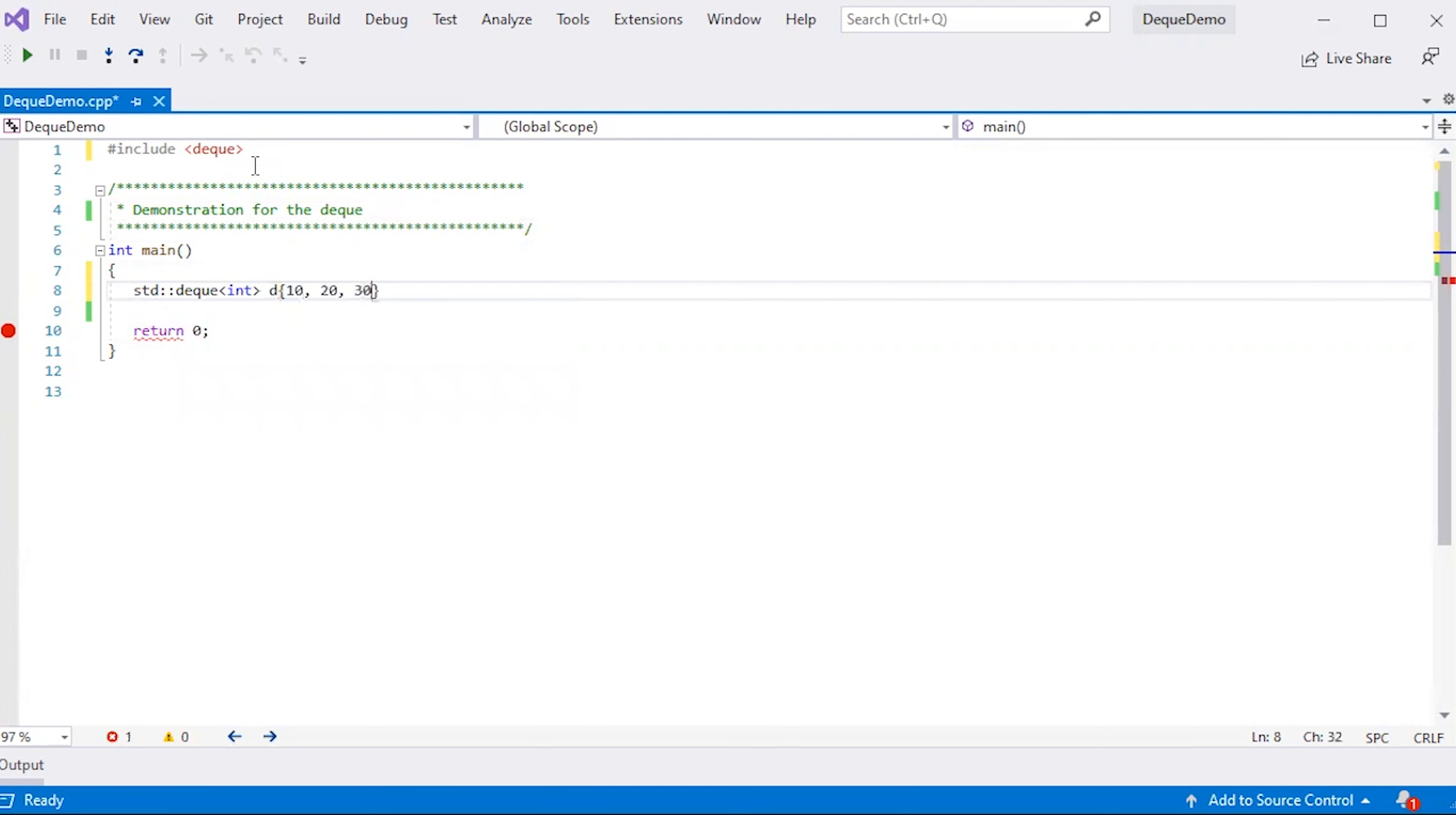I'll also instantiate a deck iterator. Here, I'm just going to say auto rather than std::deck of int::iterator. I'm going to have it point to the second element. So beginning will be to 10, and plus plus will be to the 20.